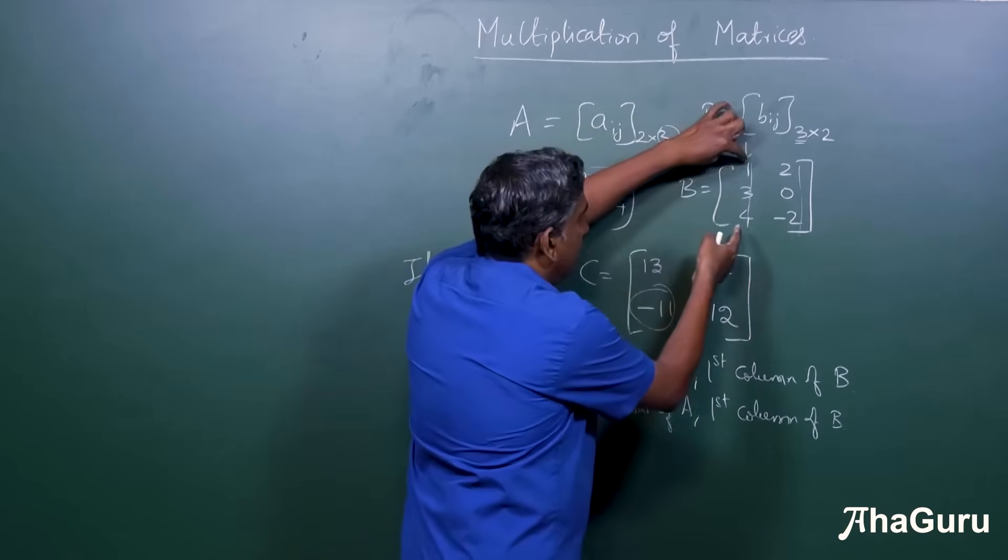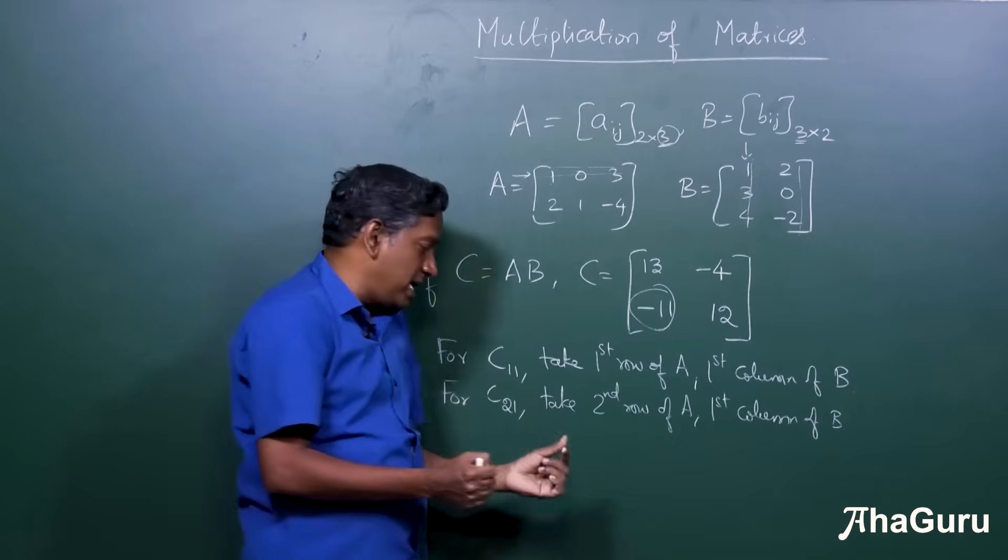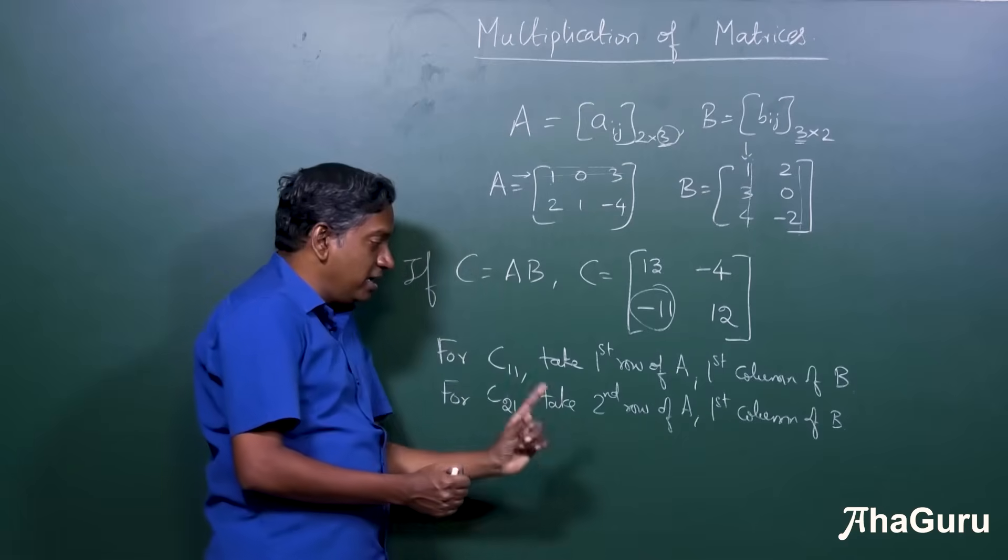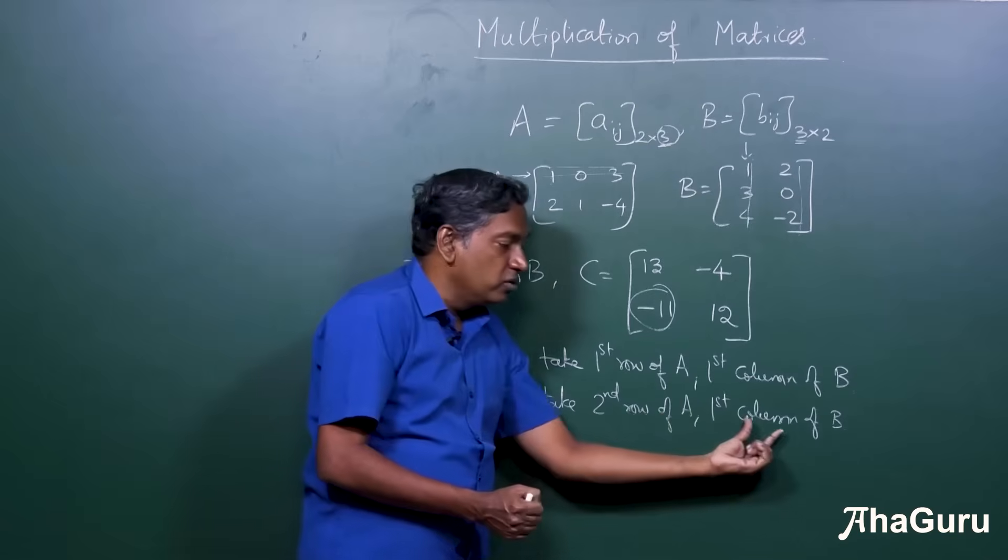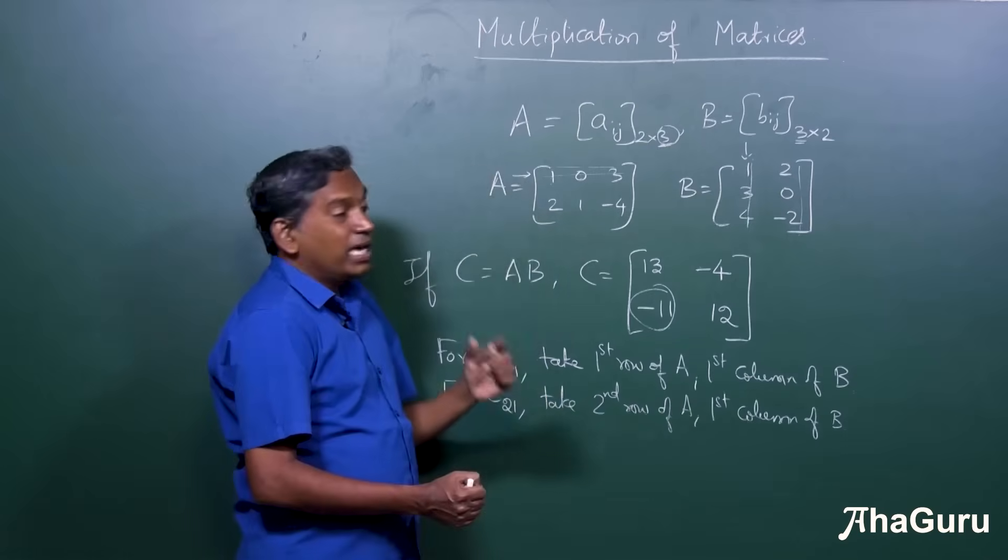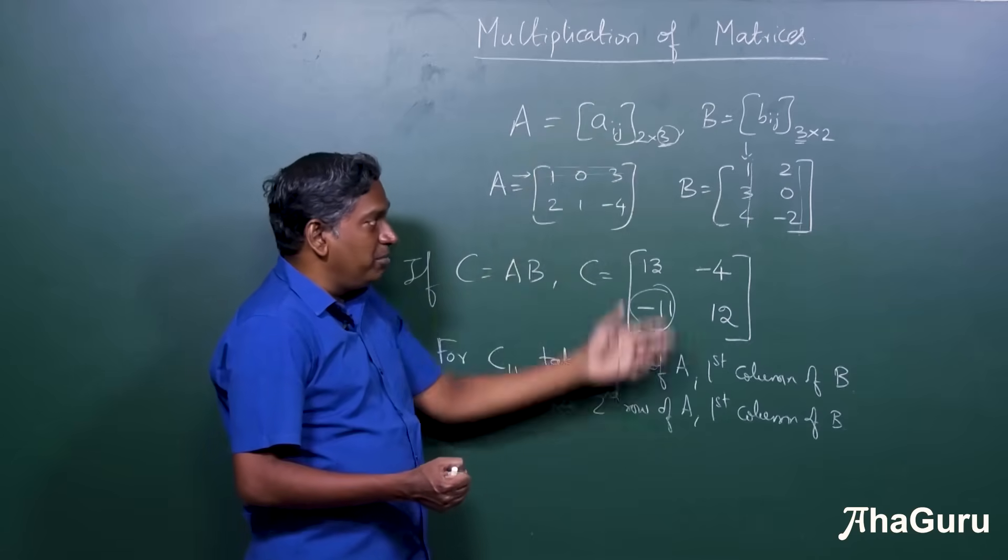So what matrix multiplication does is, takes this into this and compresses it into one entry, which is why C21 is one entry, which is obtained by multiplying second row of A into first column of B. So now, some obvious inferences we can make.